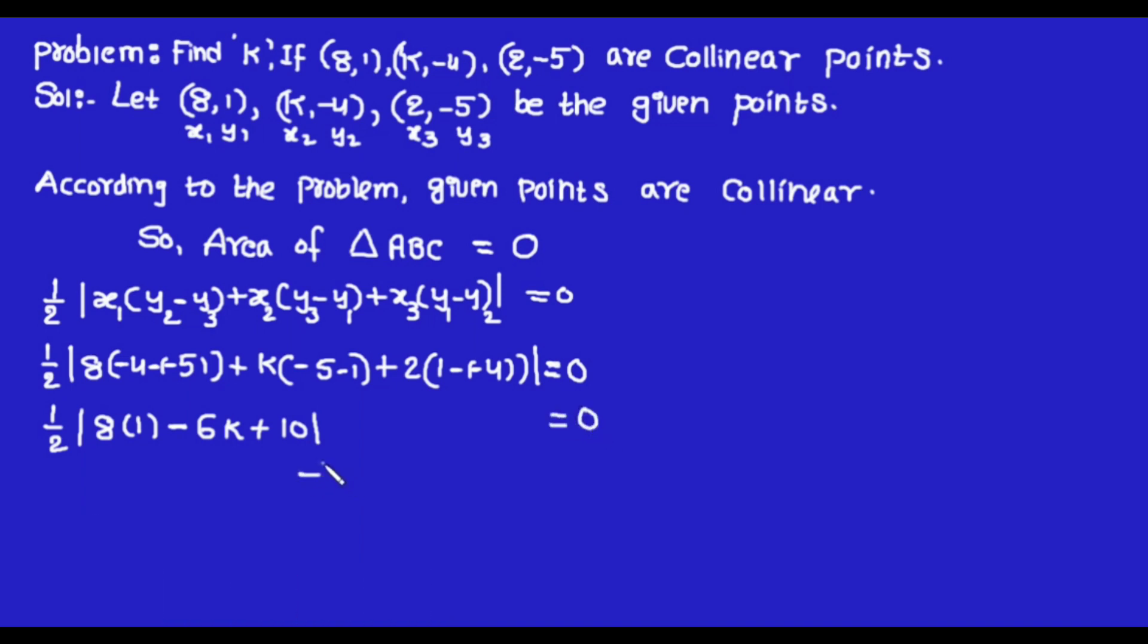After simplification, the left-hand side can be written as -6k + 18 = 0. This is multiplied by 2 because we move 1/2 to the right-hand side. Here we have to find the value of k, and by observing, we see that 6 is a common factor in both terms on the left-hand side.